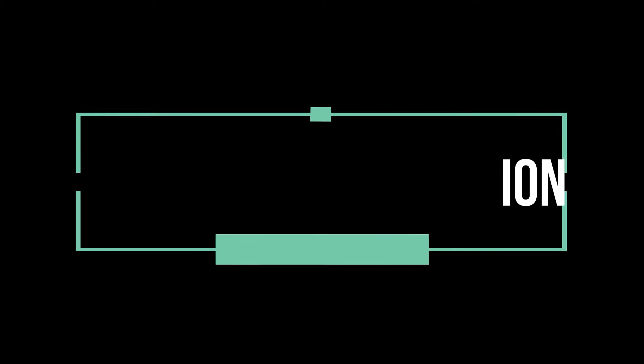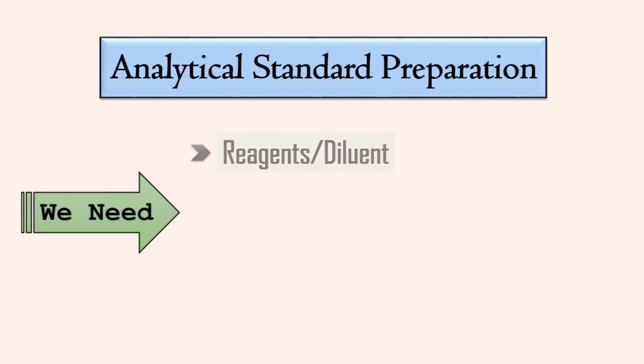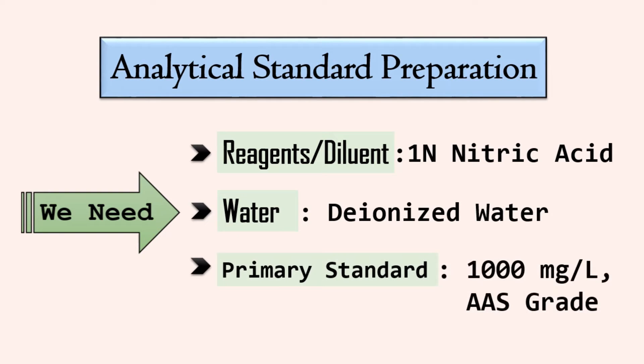For the preparation of working standards, we need a particular diluent, for example one normal nitric acid. We need deionized water for all preparations and we also need primary standard or CRM from which we will prepare working standards.